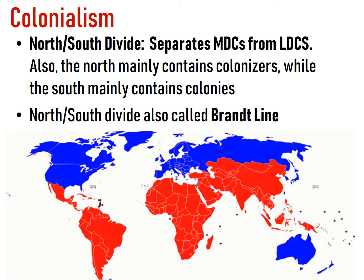We have to talk about spatial patterns, because there's a spatial distribution here. This theory is called the North-South Divide, or the Brandt Line. This generally separates more developed countries from less developed countries. Notice that developed countries and developing countries line up with who were the colonizers and who were the colonies. Somehow the people with more money and power who colonized others are more successful today, and those that were colonized aren't.